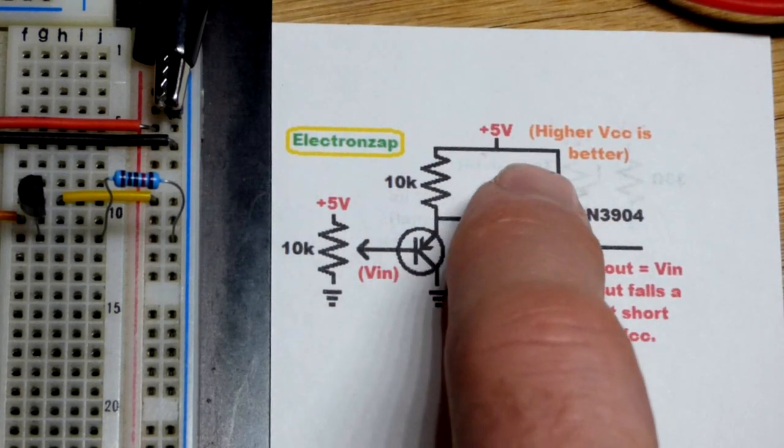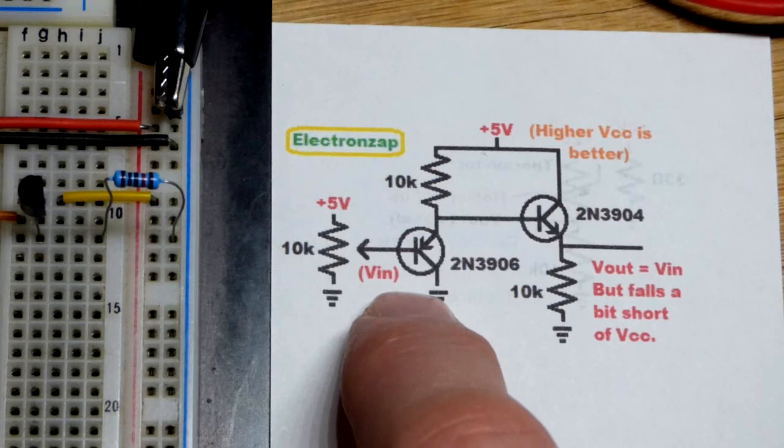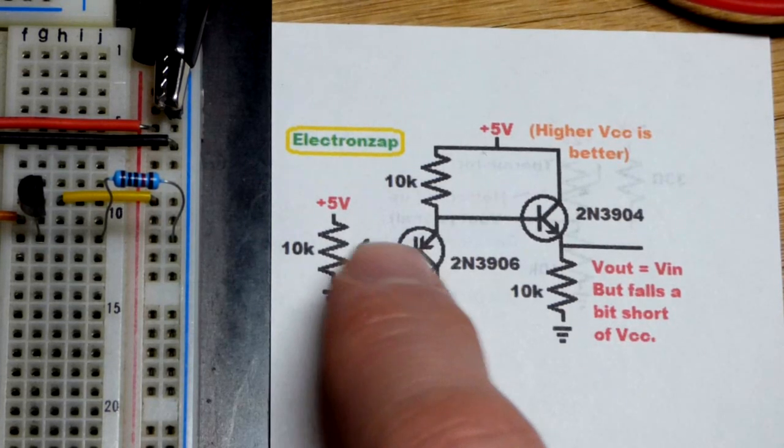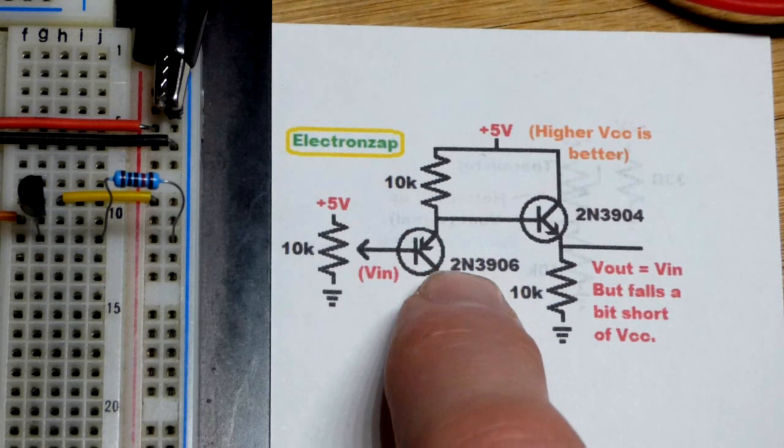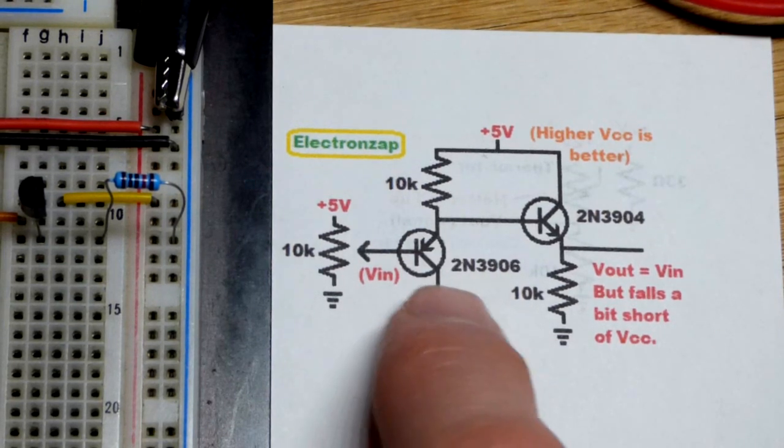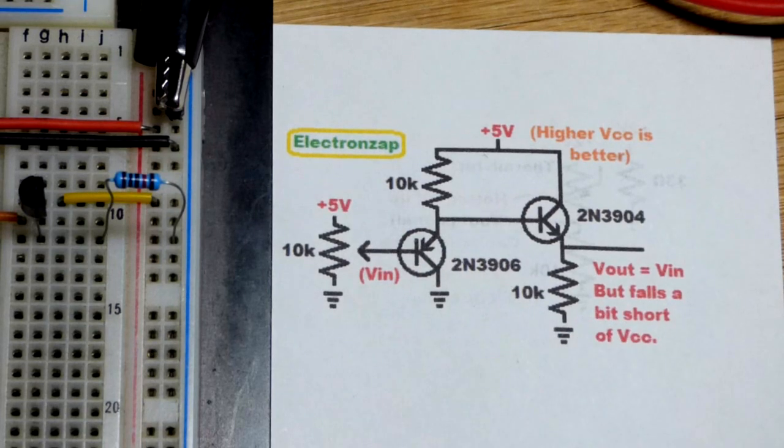So higher voltage. As I said before, I put the PNP transistor in backwards. It was doing worse. I had the collector where the emitter should be. I was losing about a volt and a half. But with the proper way now, we're losing about 0.6.